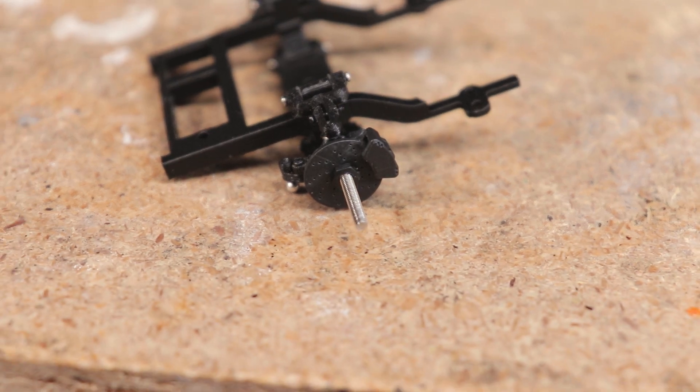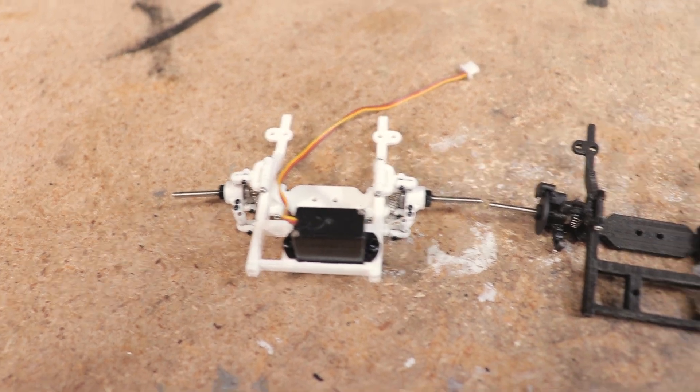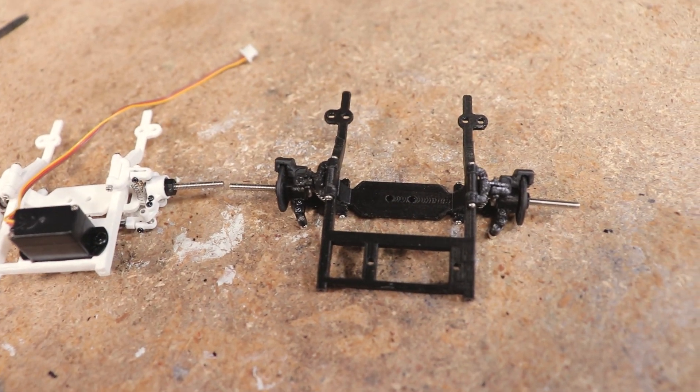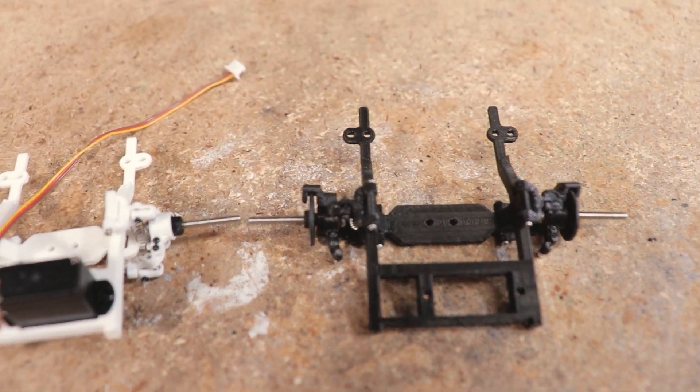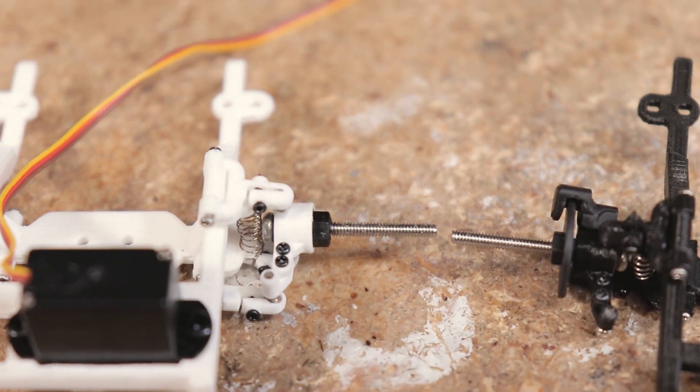A couple of things to note if you'll be adding these brakes to your assembly. First, adding these does increase the track width since the wheel mounts are pushed further out by having the rotor in place.